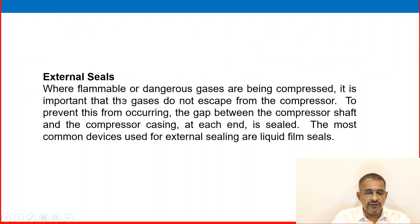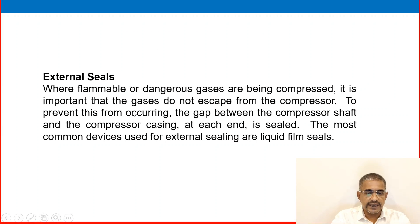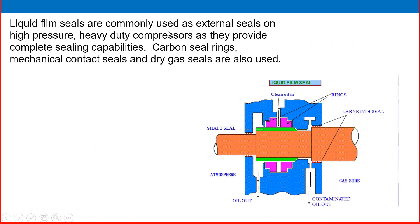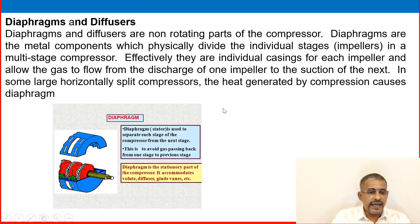External seals: wherever flammable or dangerous gases are being compressed, it is important that the gases do not escape from the compressor. To prevent this, the gap between the compressor shaft and the casing at each end is sealed. The most common external seal devices are liquid film seals, which are commonly used on high-pressure heavy-duty compressors as they provide complete sealing capability. Carbon seal rings, mechanical contact seals, and dry gas seals are also used.